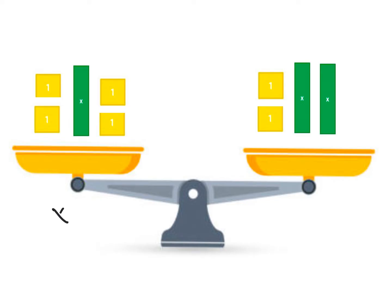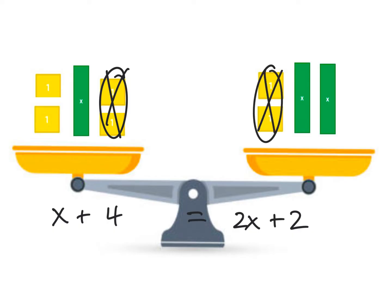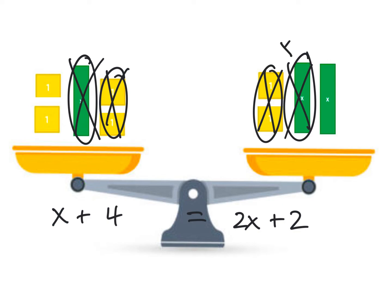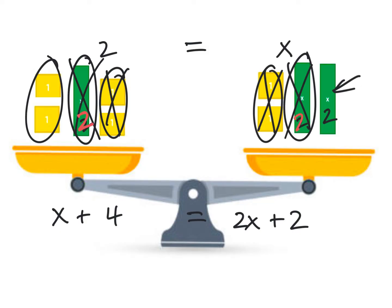Let's look at this one. On the first side I have X plus four 1 tiles, equal to two Xs plus 2. First, I look for things I can take away from both sides. I see two 1s on both sides — take them away. I also see an X on both sides — take that away too. Now all I'm left with is X equals 2. To check: replacing each X with 2 gives 6 on both sides. My scale is balanced.